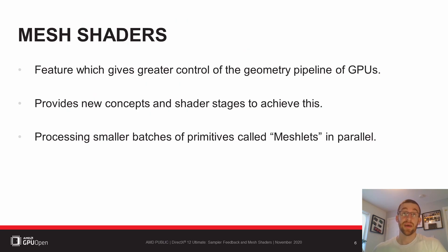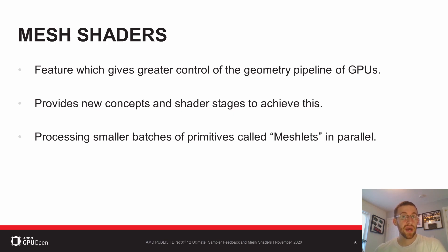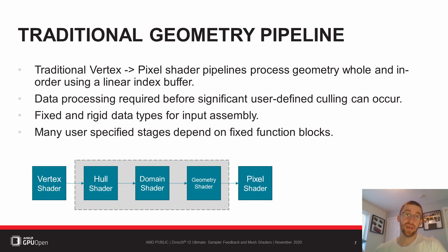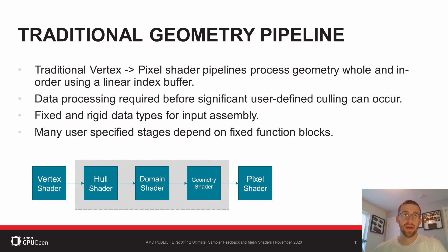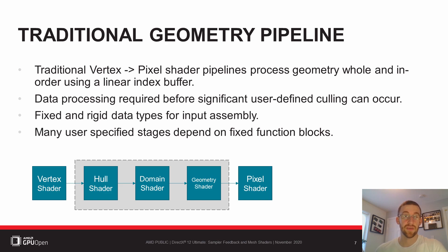The next feature we'll talk about is Mesh Shaders. Mesh Shaders are a new feature which give greater control of the geometry pipeline. There are two new shader stages to achieve this, and the primary focus is that smaller batches of geometry are processed in parallel. Traditionally, geometry has been processed as large, in-order buffers of index and vertex data. This rigid structure depends on fixed function blocks, limited data types, and requires developers to pre-process input geometry in various ways through memory and compute to cull effectively for the best performance.